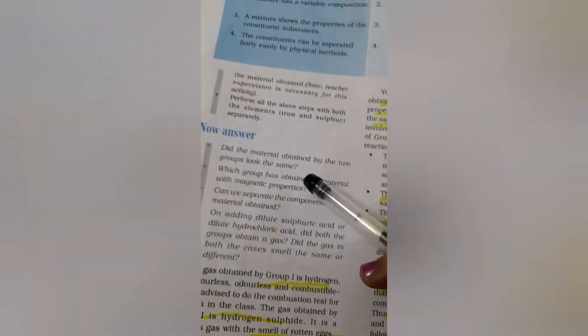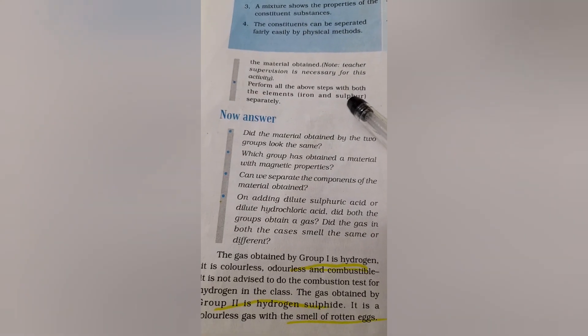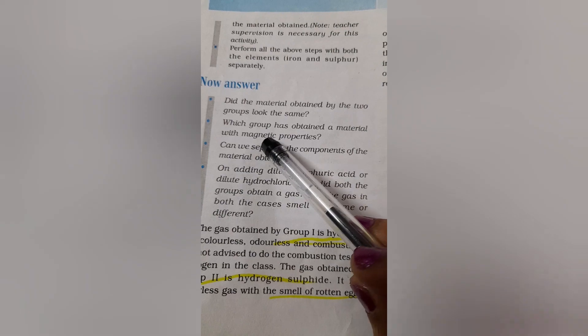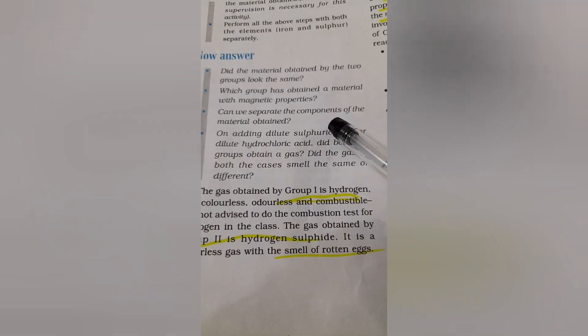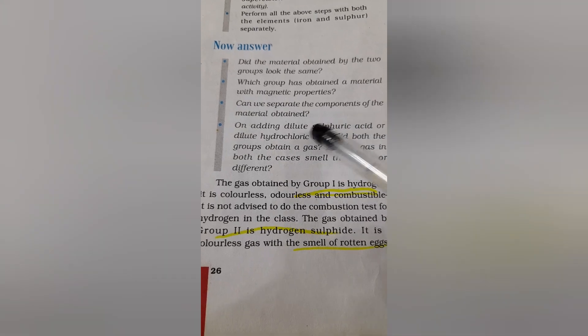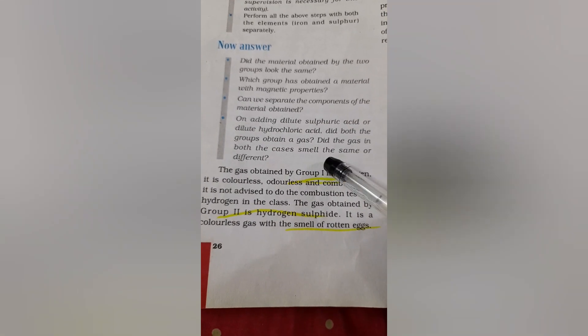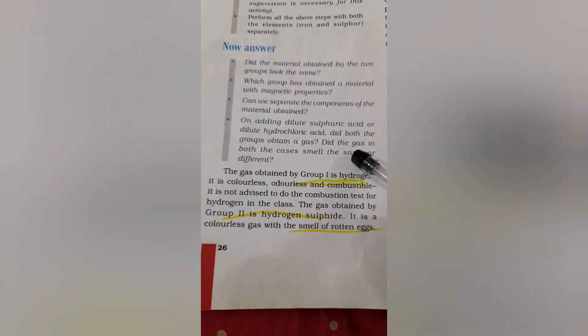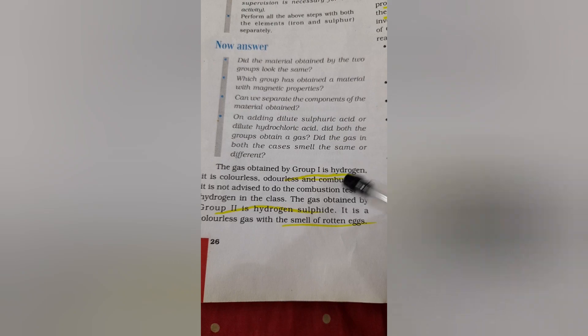What observation can you see here? The material obtained, both the groups do not look the same. Which group has obtained a material with magnetic properties? Can you separate the components of the mixture obtained? What happens on adding sulfuric acid or hydrochloric acid? You get a gas. Does the gas in both cases smell the same or different?